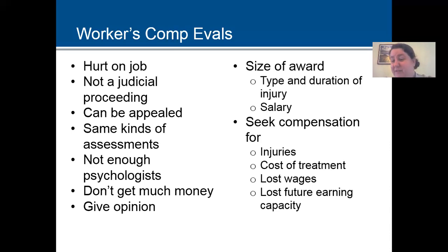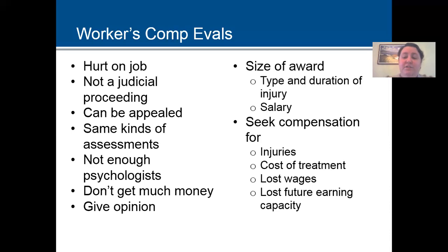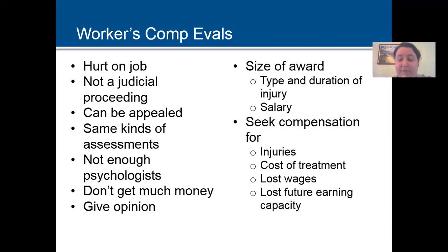If a worker is dissatisfied with the evaluation, they can get an independent evaluation. The workers' comp bureau is the client if they hire you — not the person in the room. You usually don't get a lot of money for these evaluations. If workers are compensated, the size of the award is determined by the type and duration of the injuries and their salary at the time of the injury. Workers can seek compensation for physical and psychological injuries suffered at work, the cost of treatment, lost wages, and the loss of future earning capacity.